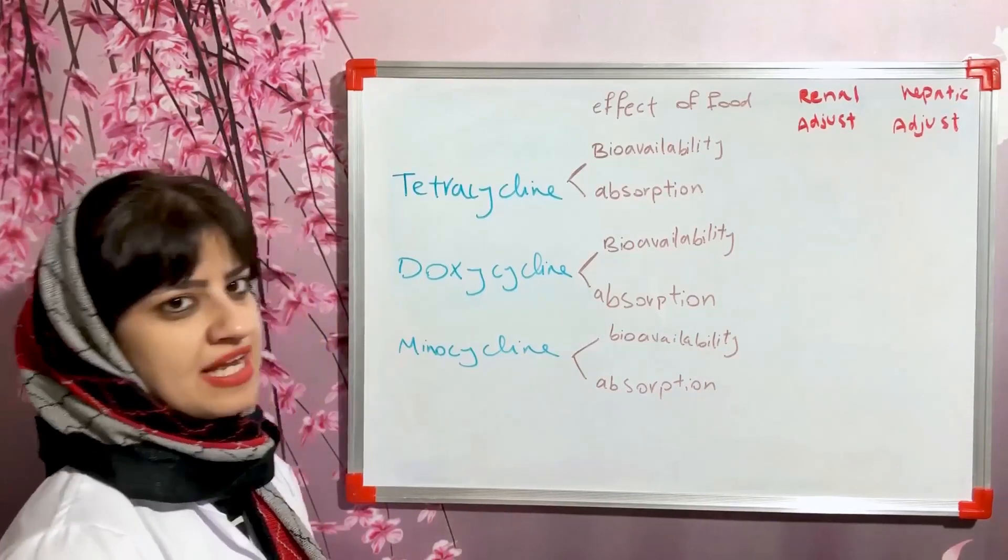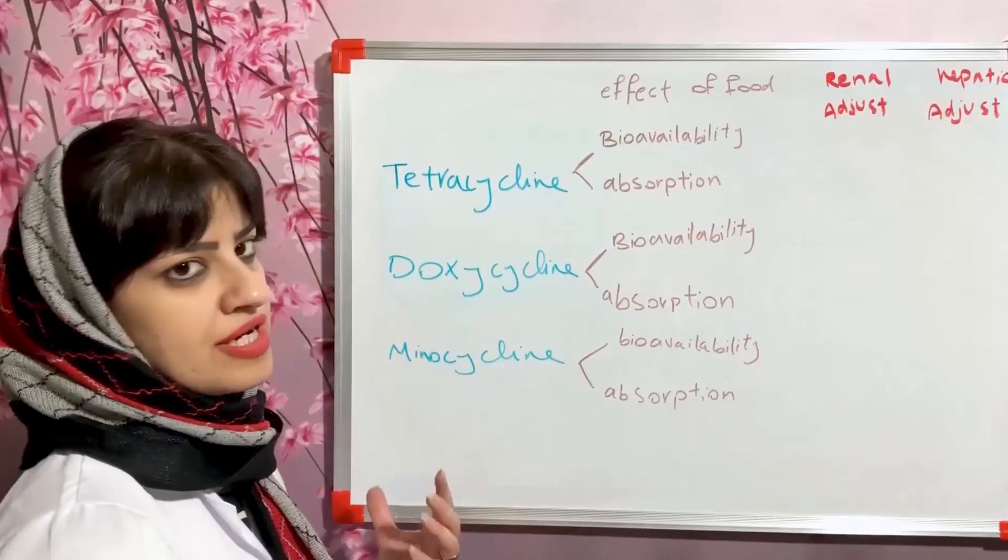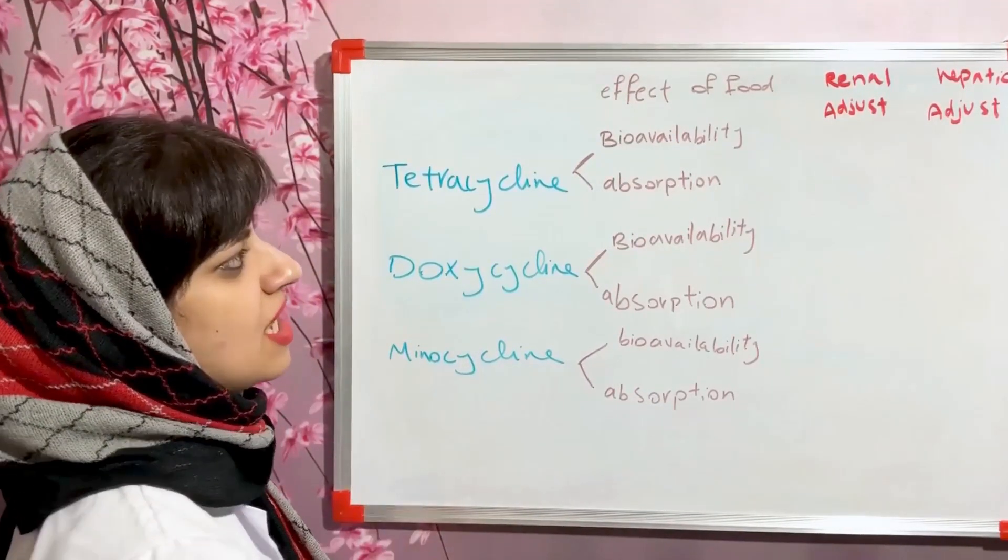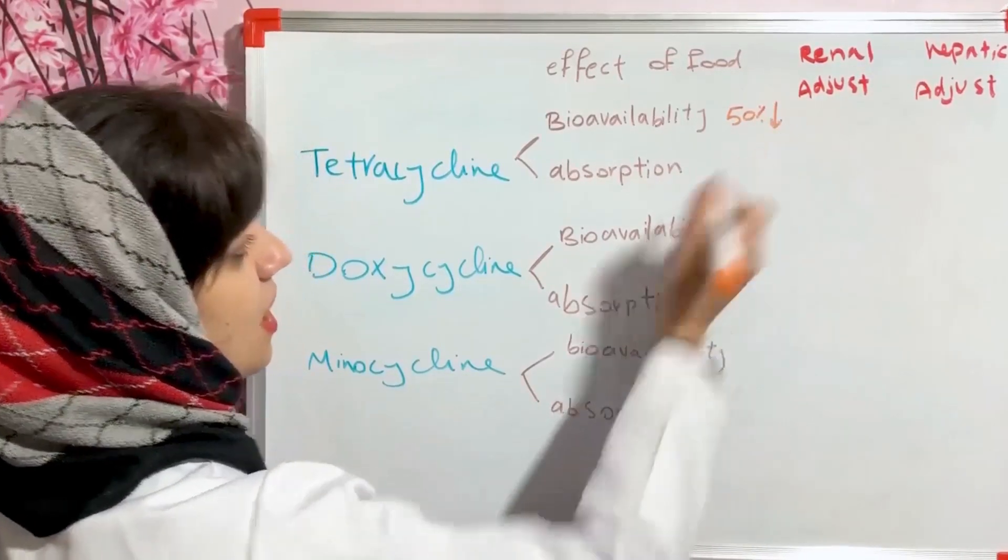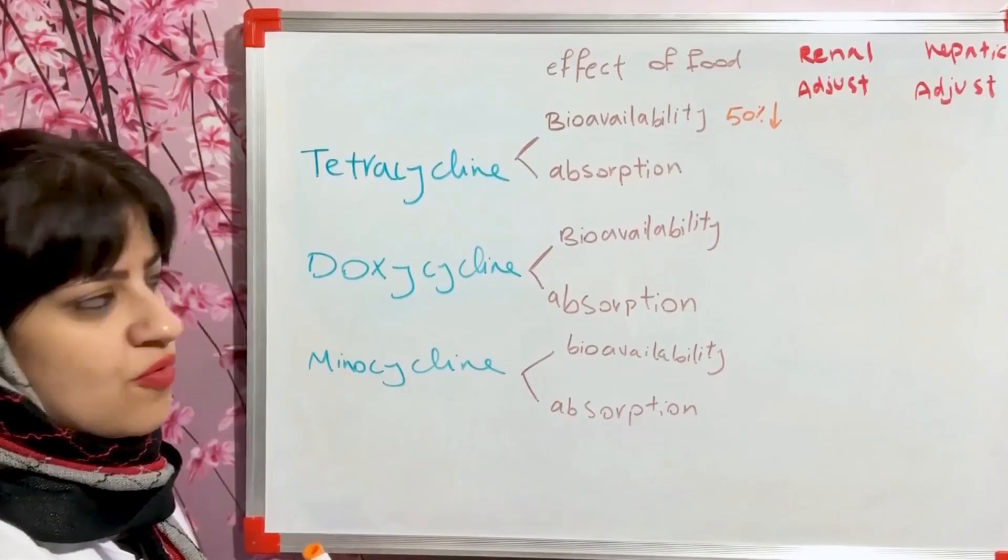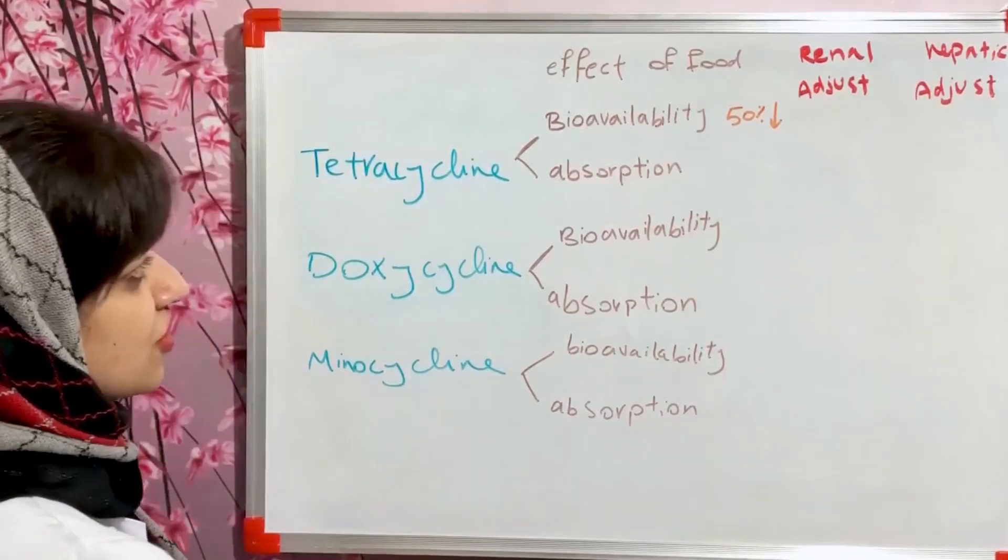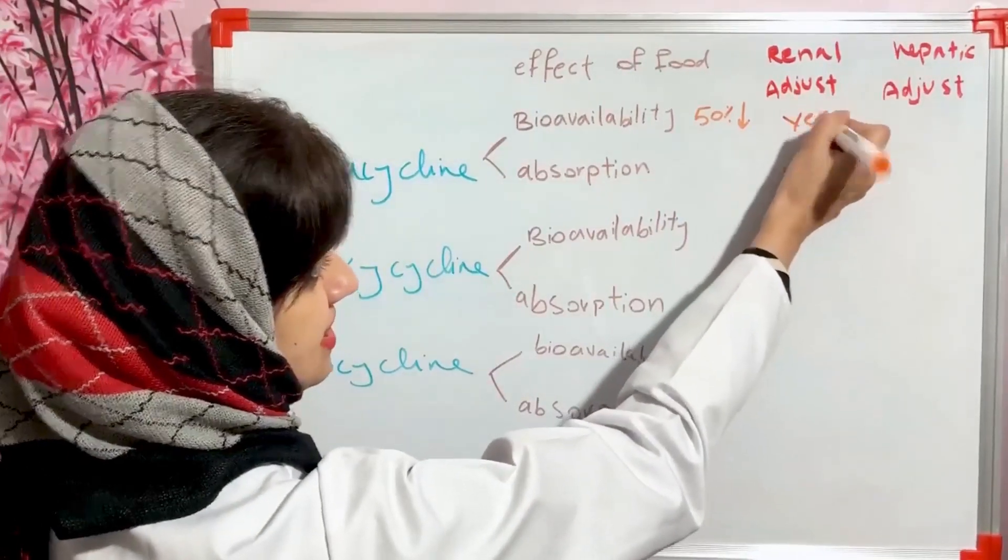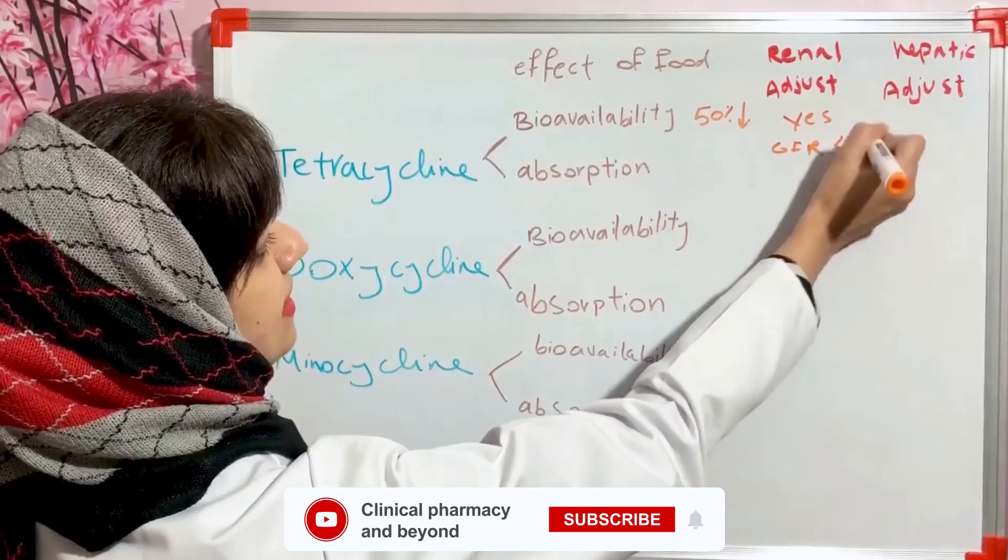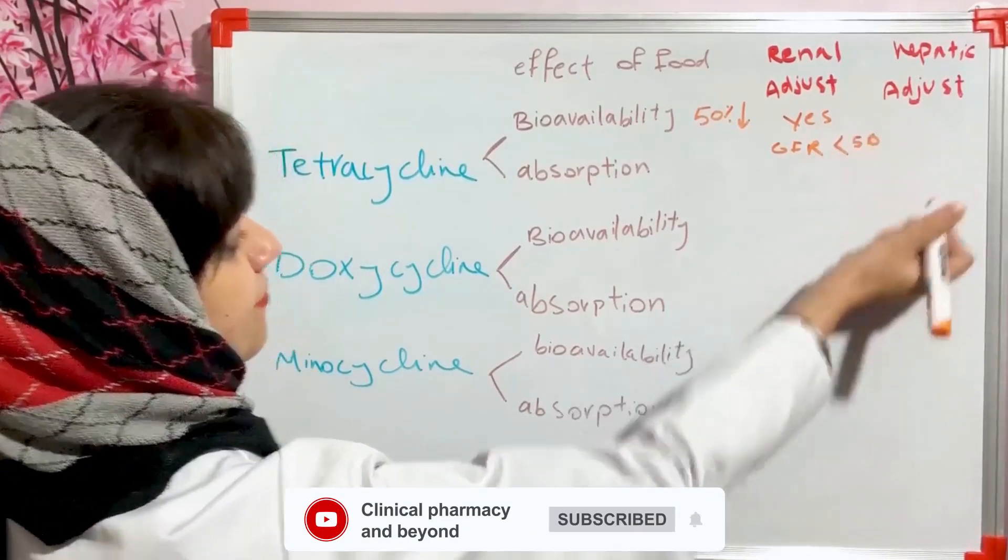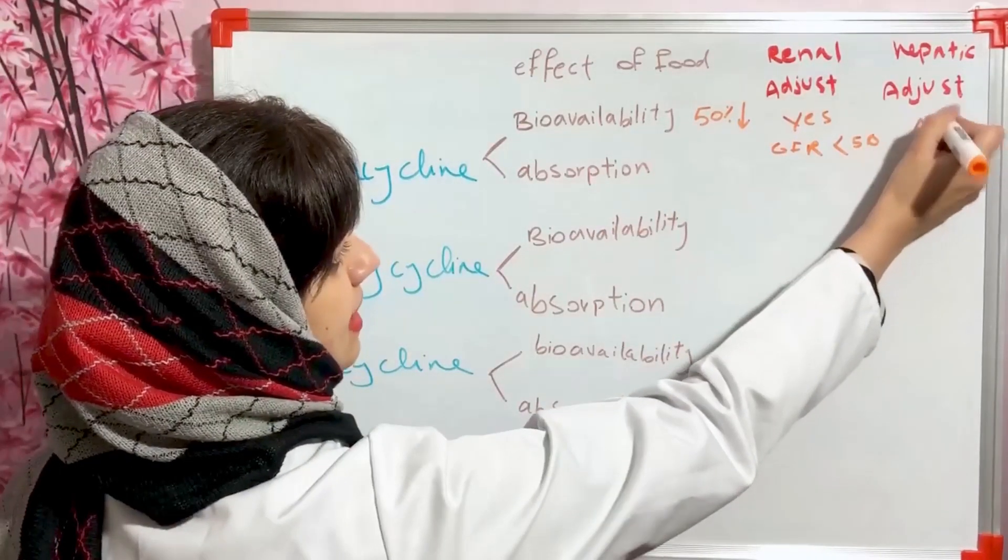Let's start with tetracycline. Taking with food actually reduces the bioavailability of tetracycline by around 50 percent, so it should be taken one hour before or two hours after food. Tetracycline should be dose adjusted in GFRs lower than 50. However, it does not need any hepatic adjustment.